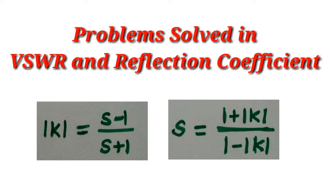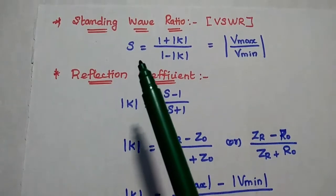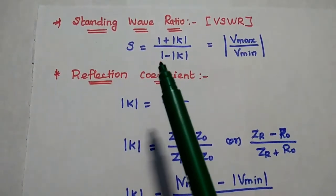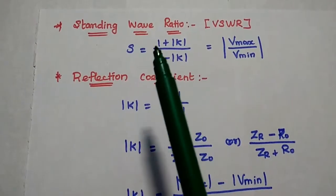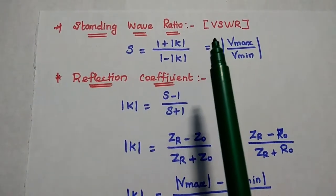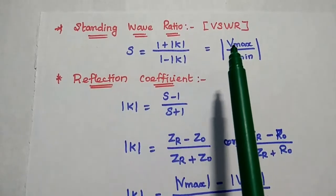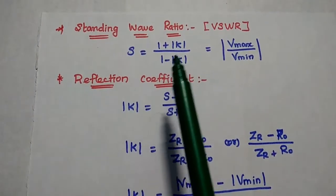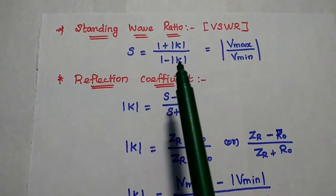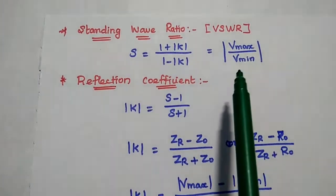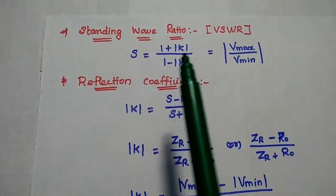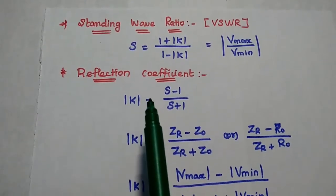Dear students, now we are going to solve important problems in VSWR and reflection coefficient. Before going to solve the problems, let's discuss important formulas to be used. Standing wave ratio, also known as VSWR: S is equal to 1 plus K divided by 1 minus K, which is also equal to Vmax over Vmin. K represents the reflection coefficient.